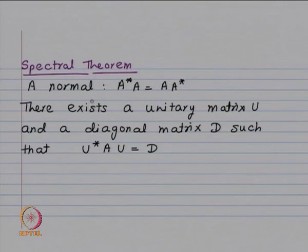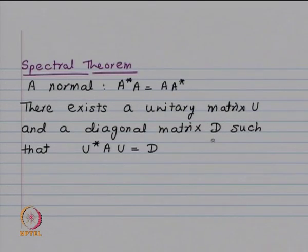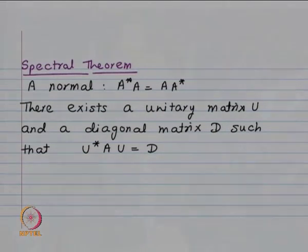The spectral theorem states: if A is normal (A*A = AA*), then there exists a unitary matrix U and a diagonal matrix D such that U*AU = D. The statement is existential — we are not giving a recipe, as that is simply not possible in general.